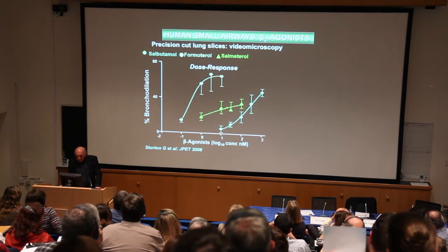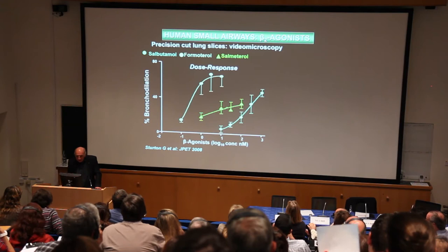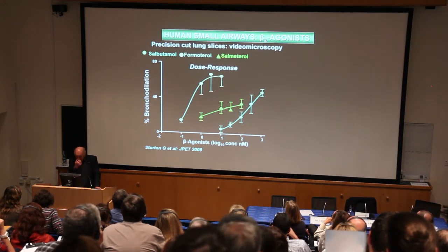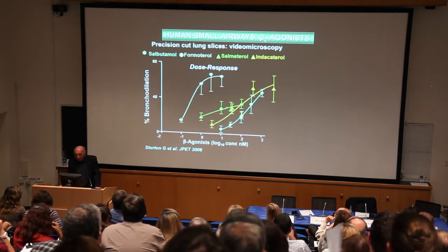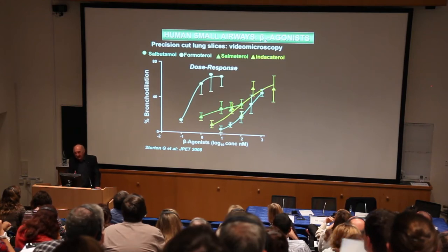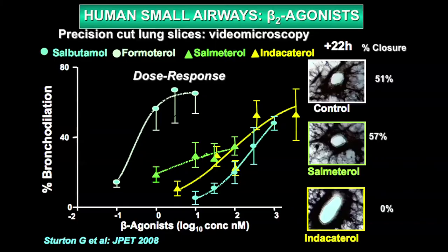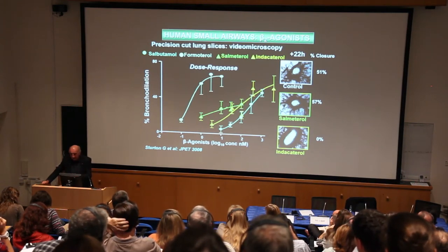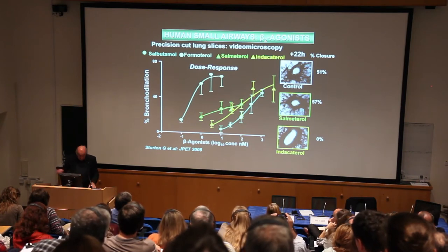Looking at small airways from humans using precision cut lung slices, formoterol has quite a good bronchodilator effect on small airways, whereas salmeterol has a rather poor effect — it's a partial agonist, not as effective in bronchodilating peripheral airways. Indacaterol, however, is equally efficacious, less potent but behaving more like a full agonist. The big advantage of indacaterol compared with salmeterol, apart from this difference in agonism, is the duration of action — indacaterol is still dilating airways 22 hours after exposure in vitro, whereas salmeterol has completely worn off.